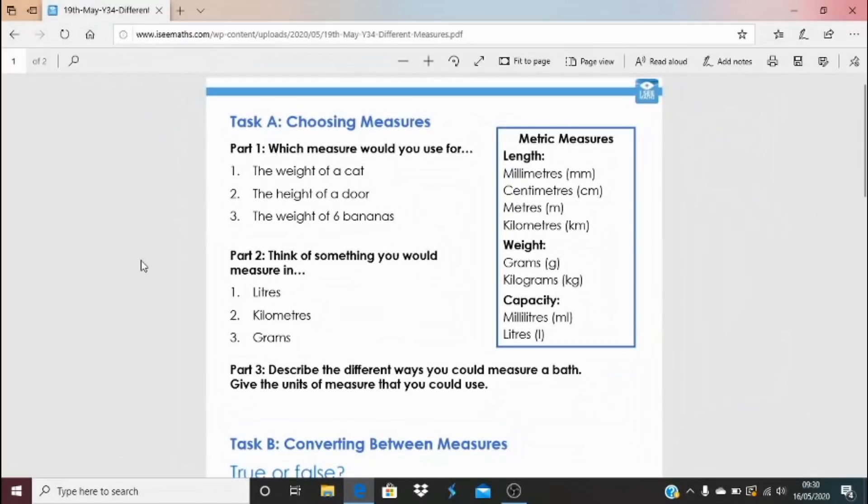To apply these ideas, this is today's task. So for task A, which I'd imagine fairly well everyone will have a go at, choosing measures. So have a think, which measure would you choose for measuring? We've got the weight of a cat, the height of a door and the weight of six bananas. So we've got a list here and which you think would be the most appropriate to measure with.